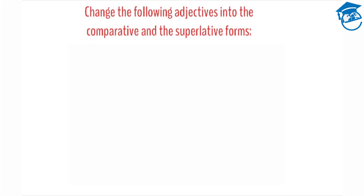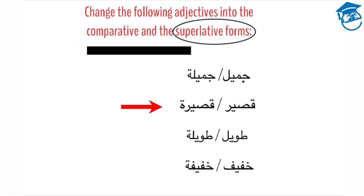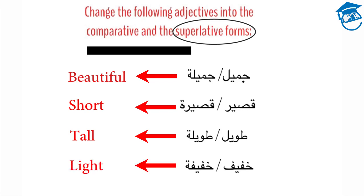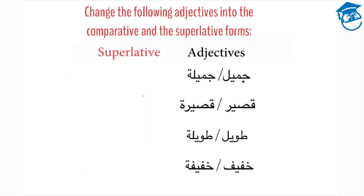Now it's your turn. Change the following adjectives into both the comparative and superlative forms. The adjectives are: jamil (beautiful), qasir (short), tawil (tall), and khafif (light). Pause the recording and practice writing the superlative form of each adjective.